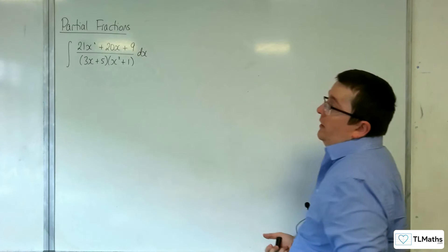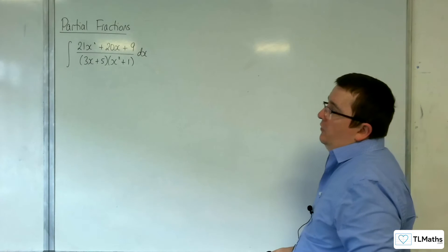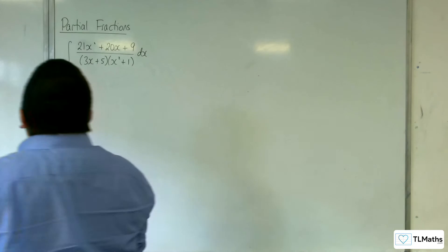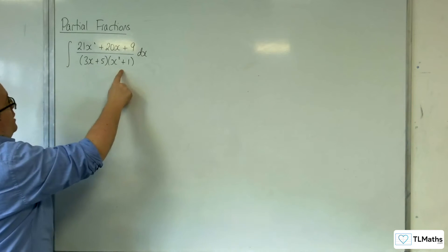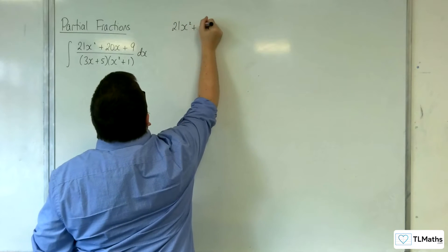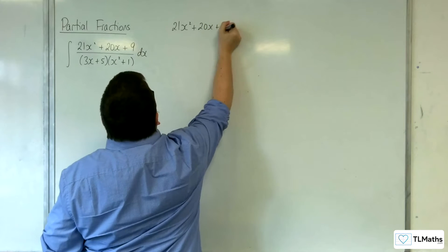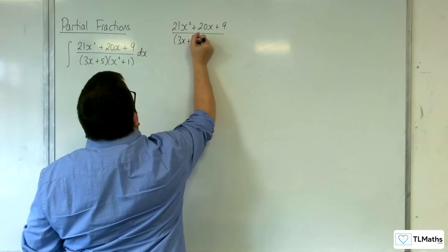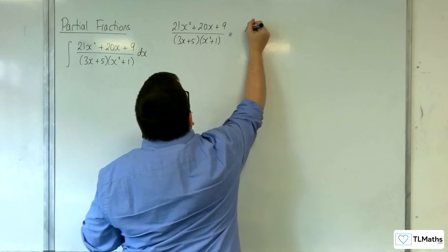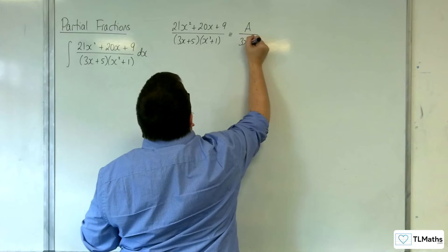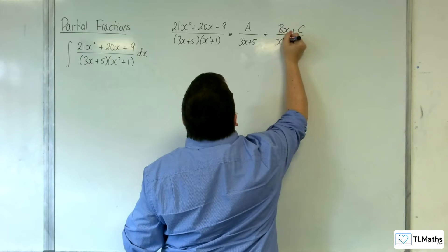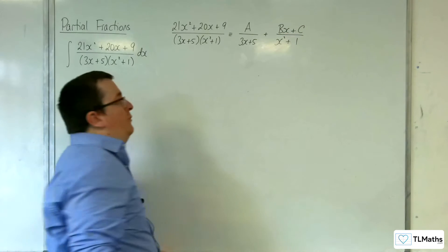In this video I'm going to be integrating 21x squared plus 20x plus 9 over 3x plus 5 times x squared plus 1. We need to spot that we need to split this into partial fractions. So we'll have 21x squared plus 20x plus 9 over (3x plus 5)(x squared plus 1) in the format a over 3x plus 5 plus bx plus c over x squared plus 1, because x squared plus 1 won't factorise.